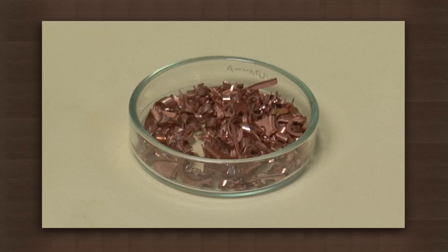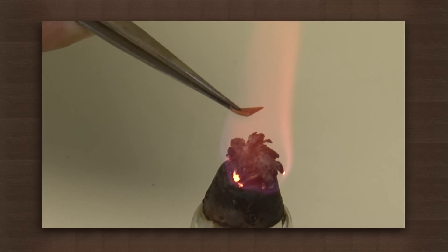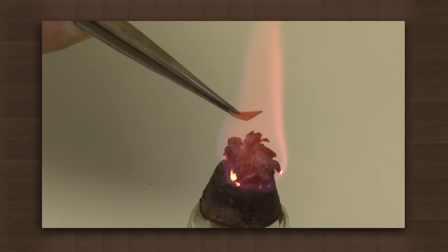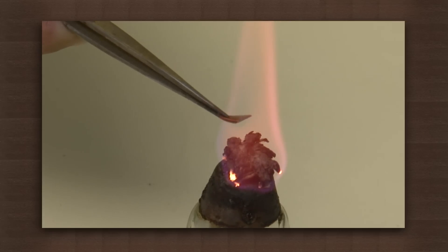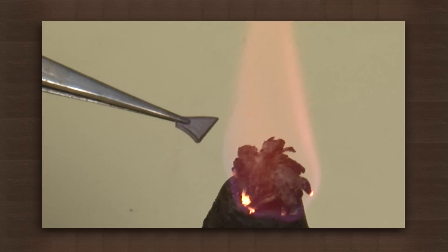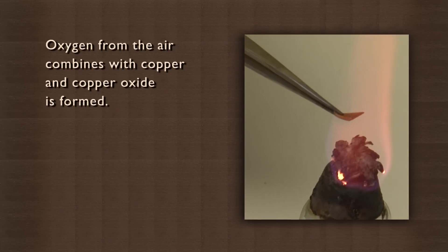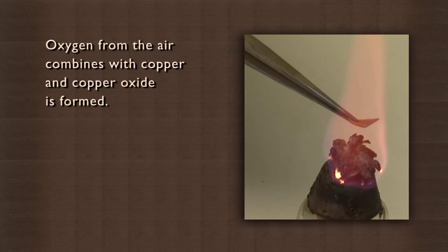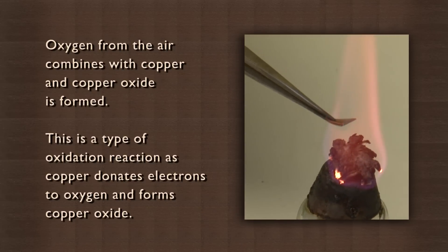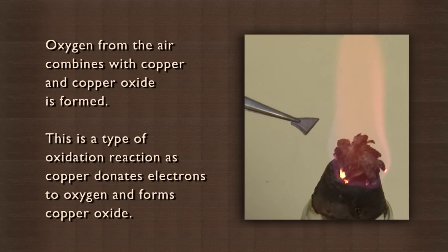Let us try an experiment to see a reaction of a metal with oxygen. For this, you need some copper filings. Take a small piece of copper filing and hold it in the flame. After a few seconds, you see the shiny copper becomes black. This black substance is copper oxide. Oxygen from the air combines with copper and copper oxide is formed. This is a type of oxidation reaction as copper donates electrons to oxygen and forms copper oxide.